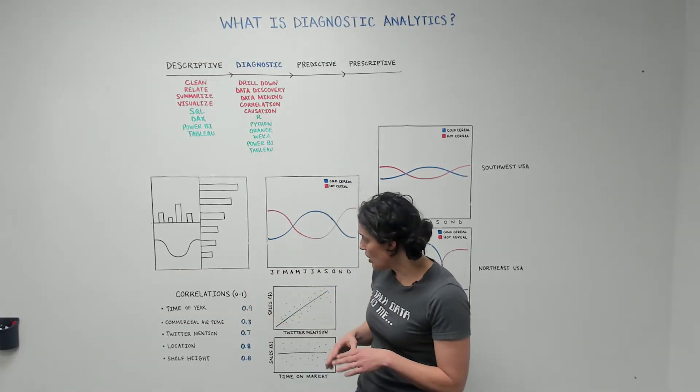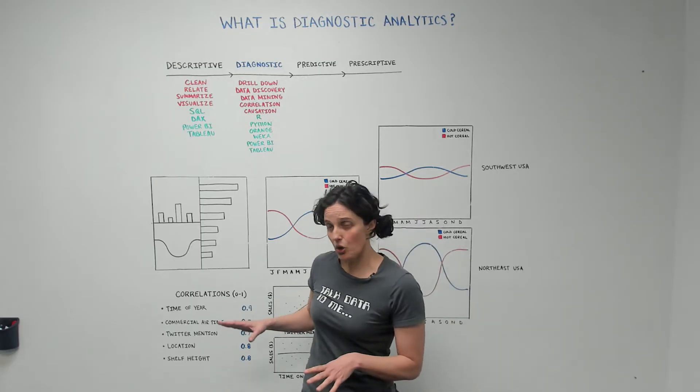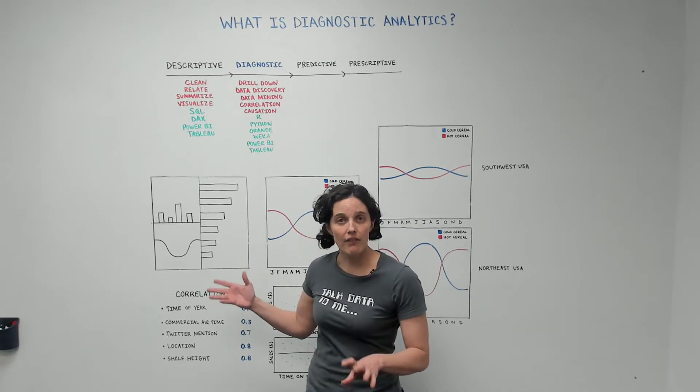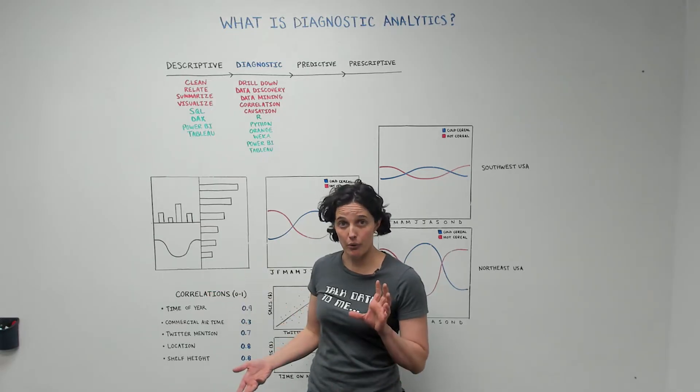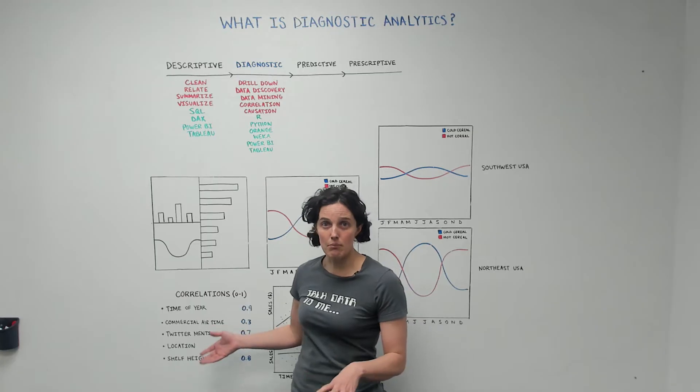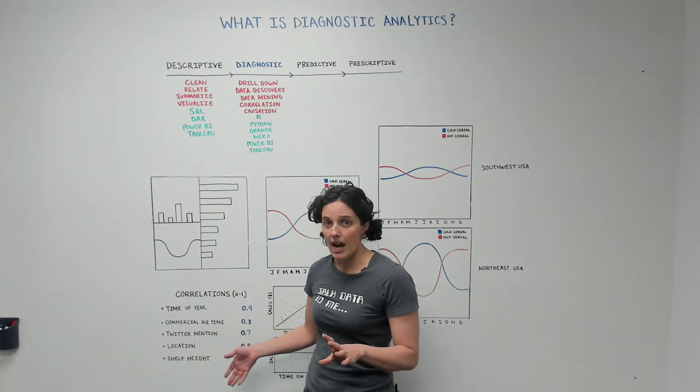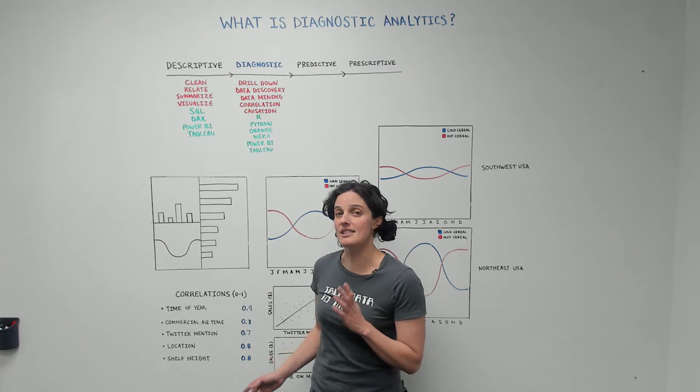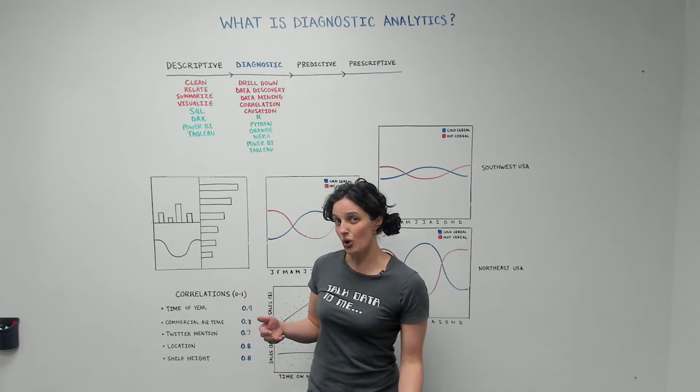First we're going to find correlations in our data where we want to know what's driving the revenue, what's causing it to go up or down. So we're going to pick out a bunch of features that we think might impact that revenue, and then we're going to find a number that tells us it's either highly correlated or low correlation.